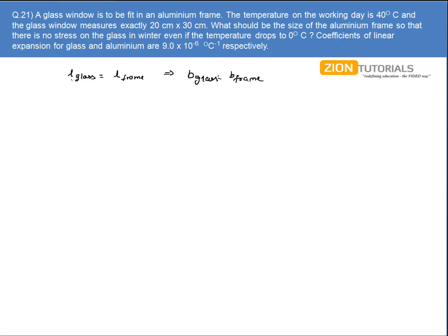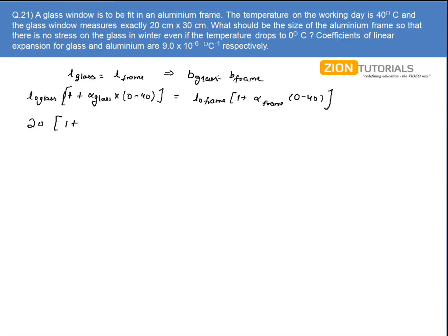The final length of the glass can be written as: initial length of glass times (1 + alpha of glass times delta T), where delta T is 0 minus 40. That is equal to the final length of the frame, which equals initial length of frame times (1 + alpha of aluminium times (0 minus 40)). The initial length of glass is 20 cm, and alpha of glass is 9 × 10⁻⁶, while alpha of aluminium frame is 24 × 10⁻⁶.